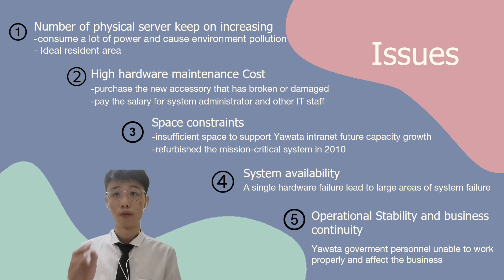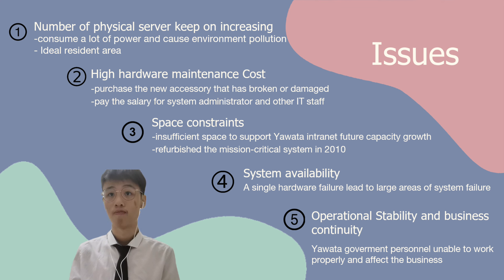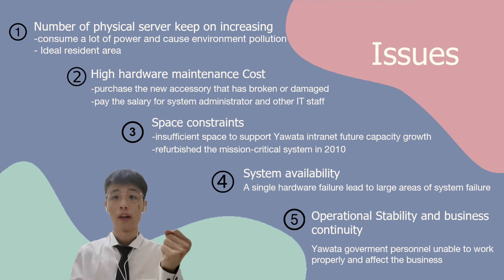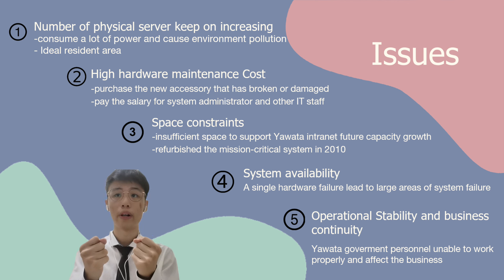The server room is full because there was a rebuild of the mission-critical system in 2010, resulting in a heterogeneous mix of new and old machines. The fourth issue is system availability. A single hardware failure will lead to a large area of system failure. For example, the groupware and the domain controller reside on the same machine. So if there are any changes in the groupware, the neighboring application domain controller will also be affected.